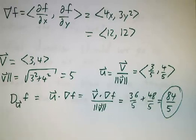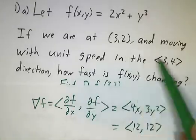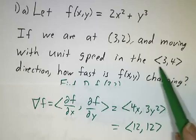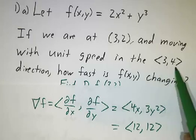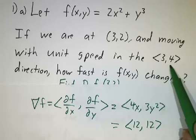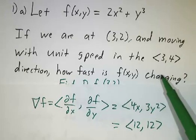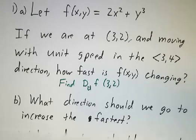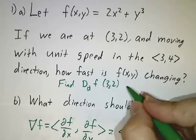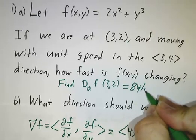Starting at the point (3, 2) and moving at unit speed in the direction of the vector (3, 4), the rate of change of the function is 84/5. So our answer is 84/5.